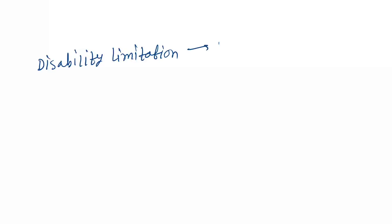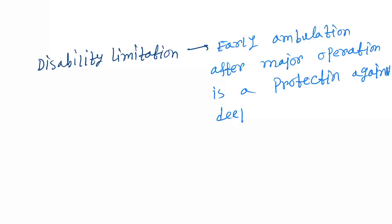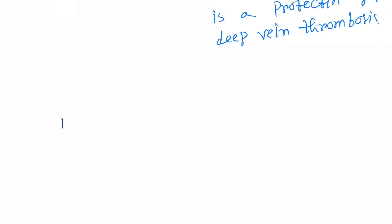Disability limitation — an example is early ambulation after a major operation. This is a protection against deep vein thrombosis. You can understand by this example.